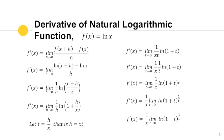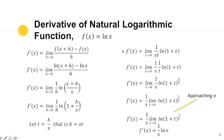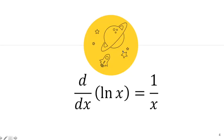That means our derivative f'(x) is equal to (1/x) · ln(e). And we know that ln(e) is just equal to 1. So this verifies that the derivative of ln(x) is equal to 1/x. Remember: the derivative of the basic function ln(x) is simply 1/x.